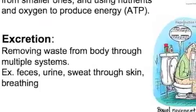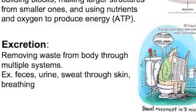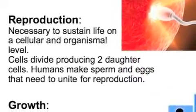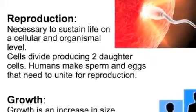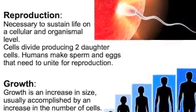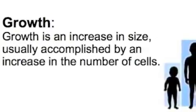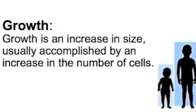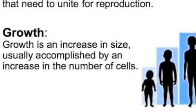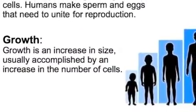Feces is the solid waste. Urine and sweat are both liquids. And breathing is to get rid of gaseous waste. Then, we need to reproduce. In order to sustain life, cells need to make two daughter cells, but organisms also need to reproduce so we don't go extinct. Finally, growth — we have to increase in size. It's not viable to stay at baby level. That increase in size means we have to divide cells and make more and more.